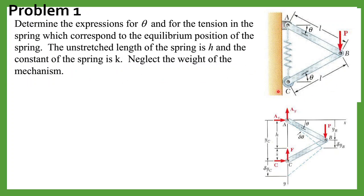So this is the mechanism. We have two members AB and BC, and they are connected with this spring. Here we have a roller so they can move freely. First step is to draw the free body diagram of this. Below we have drawn the free body diagram.